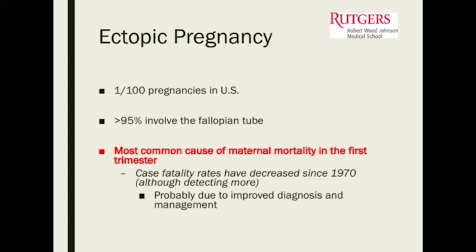One in 100 pregnancies in this country are ectopic pregnancies. Greater than 95% of them are in the fallopian tube. It's really important to think about ectopic pregnancies — it's the most common cause of maternal mortality in the first trimester.